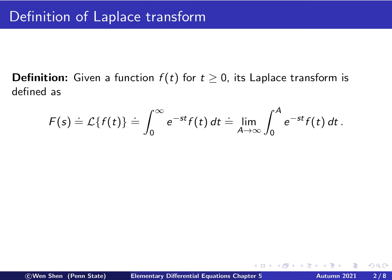We begin with the definition of the Laplace transform. You are given a function f as a function of t, for t bigger than 0. Its Laplace transform is defined as another function — we call it capital F of s, which is a different variable. We write the fancy math curly L to denote the Laplace transform of f of t, which is an integral: you integrate from 0 to infinity of f(t) multiplied by e to the negative st.